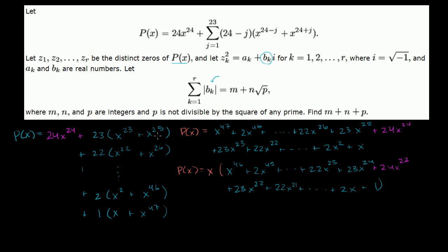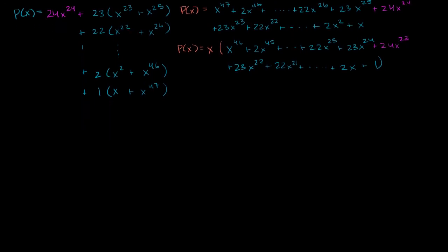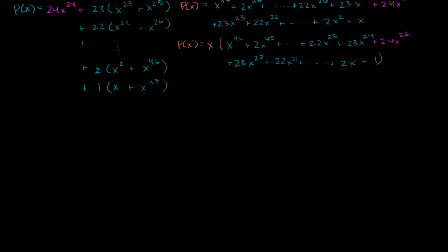This next step might not be obvious. But once you see it, if you ever see this pattern again in competition problems, you should be able to recognize it — it's just not something you normally see in everyday curriculum. What I want to do to see the pattern is think about what happens when we square polynomials where all coefficients are 1. So if I just take x plus 1 squared.